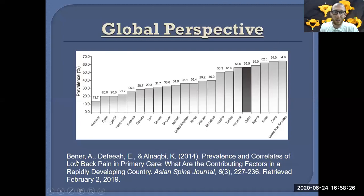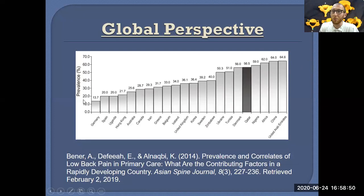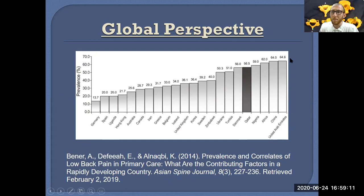A global study by Benner from 2014 looked at which countries have the most back pain. Germany had the lowest, followed by Spain, then Uganda. Countries in Africa, China, and the United Arab Emirates had the highest rates. The U.S. was not on this particular chart but would rank among the top. Check out this study on Blackboard.